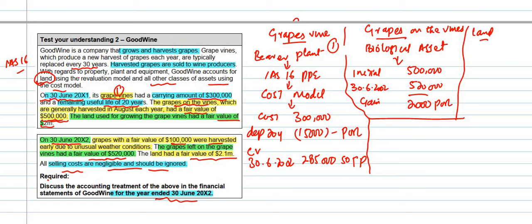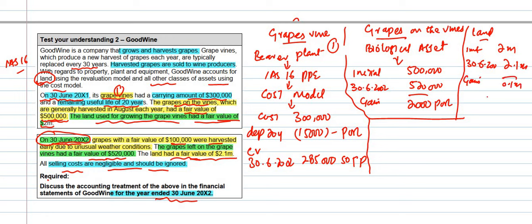For the land, Good Wine uses the revaluation model. The initial fair value was $2 million. At 30th June 2002, the land's fair value increased to $2.1 million — a gain of $0.1 million. Under the revaluation model (IAS 16), this gain is recorded in other comprehensive income (OCI), not profit or loss.